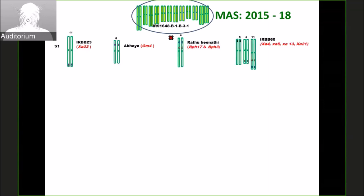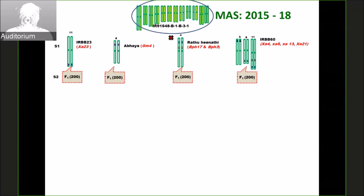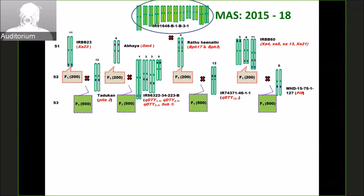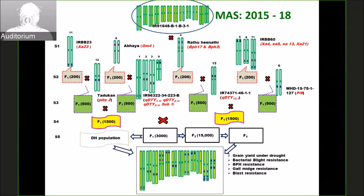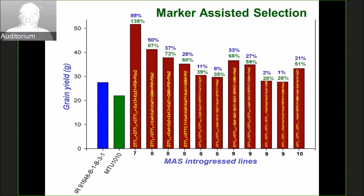We moved to marker-assisted selection and started following speed breeding. Fortunately, I am at the Philippines, where we can have three seasons of rice, and that is where we started having three generations of population improvement. The crossing program I started in 2015 aimed to bring disease resistance, drought tolerance, insect resistance, and grain quality together into the breeding program. Based on my conviction from marker-assisted backcross breeding, I asked why I couldn't tackle 8 to 10 genes together. I am happy to say that by 2018, just four years later, we have homozygous lines with eight to ten genes combined.